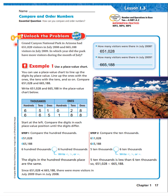The Grand Canyon National Park in Arizona had 651,028 visitors in July of 2008, and 665,188 visitors in July of 2009. In which year did the park have more visitors during the month of July? Well, it's asking you to answer these two questions. How many visitors were there in July of 2008? There were 651,028. And how many visitors were there in July of 2009? There were 665,188.